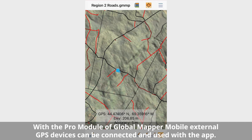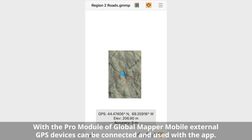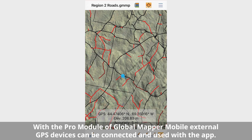From the Location Display menu, enabling GPS Display will by default use the internal location services of the mobile device to display the GPS location on the map and note the coordinate location and accuracy on screen.